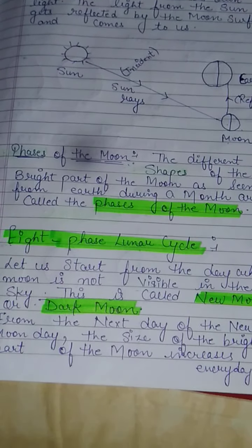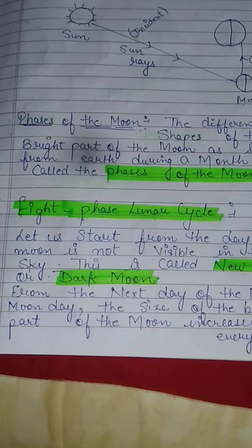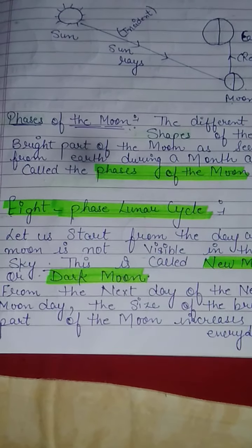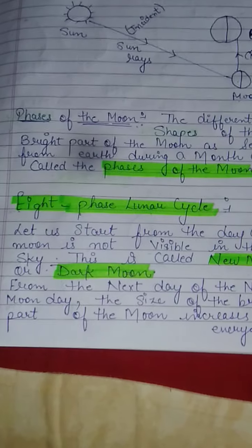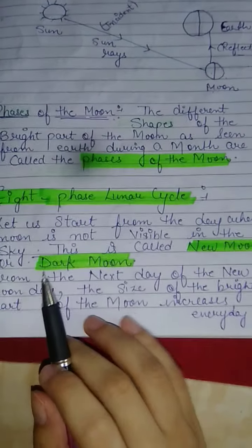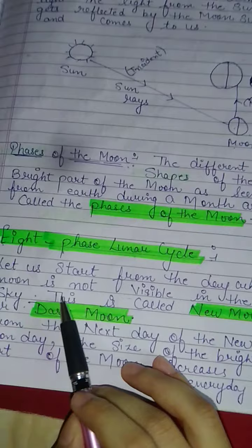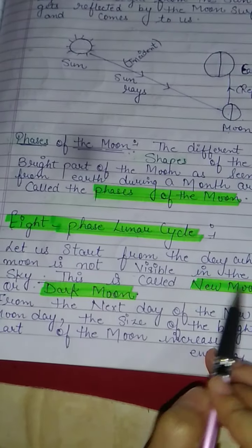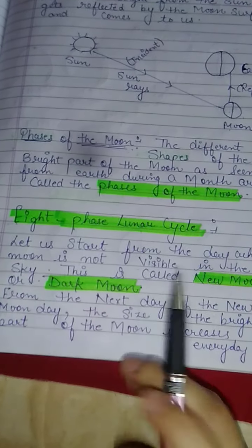There are 8 phases in the lunar cycle. Let us start from the day when the Moon is not visible in the sky — this is called new moon or dark moon.